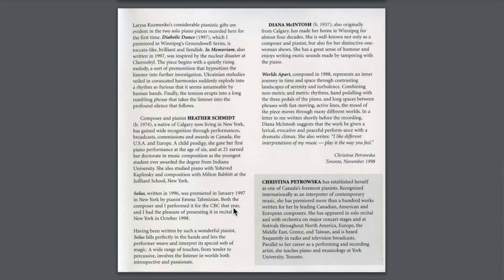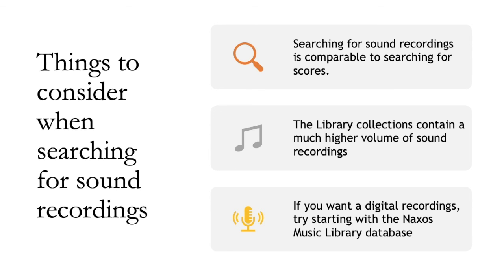If you scroll down, you'll also get some biographical information about the performer on this album. To recap, here are some things to consider when searching for sound recordings. Searching for sound recordings is comparable to searching for musical scores in the library catalog. If you're searching for an individual piece, consider the title, opus number, key, or instrumentation. When searching in the catalog, combine the composer's name with information from the title and limit to musical recordings. Remember that the library has a much higher volume of sound recordings than scores, so expect a higher number of results including both physical and digital recordings. If you only want digital sound recordings, start your search with Naxos Music Library or another sound or video recording database.